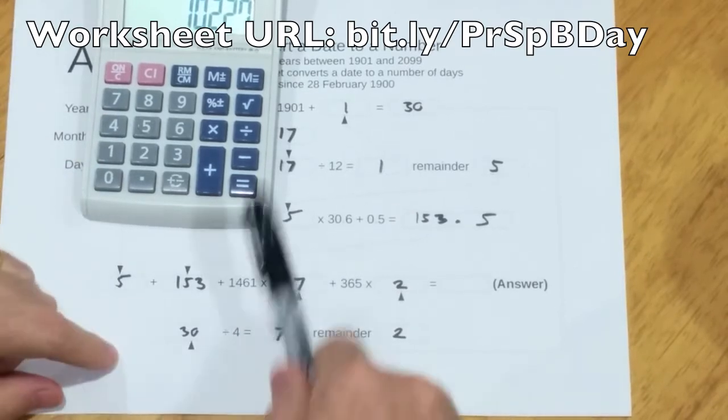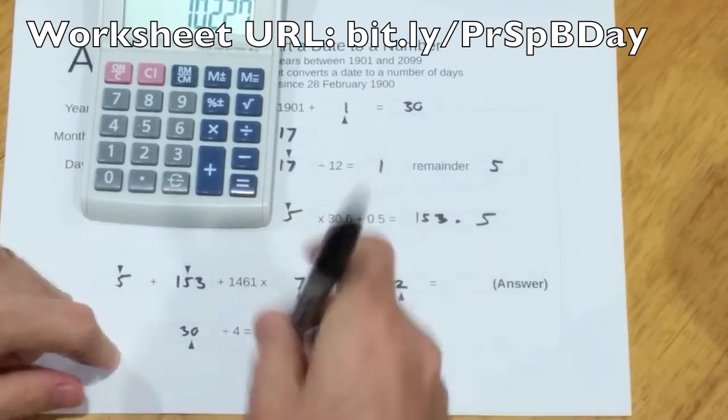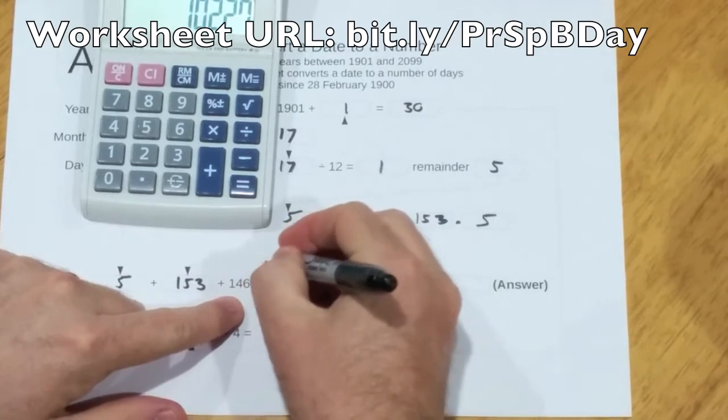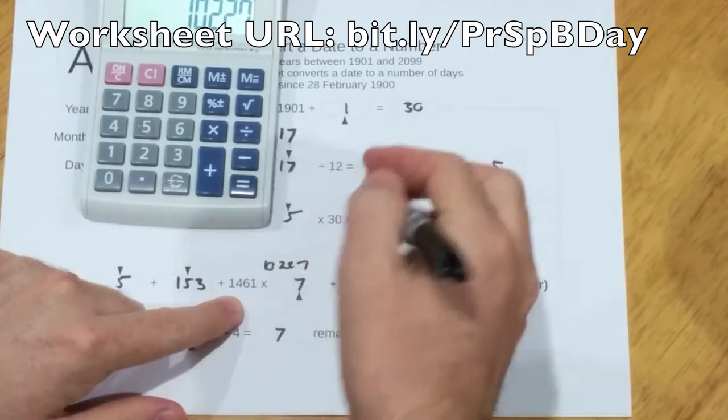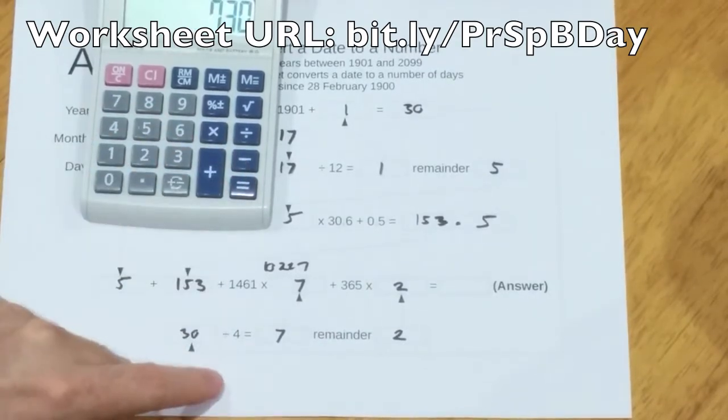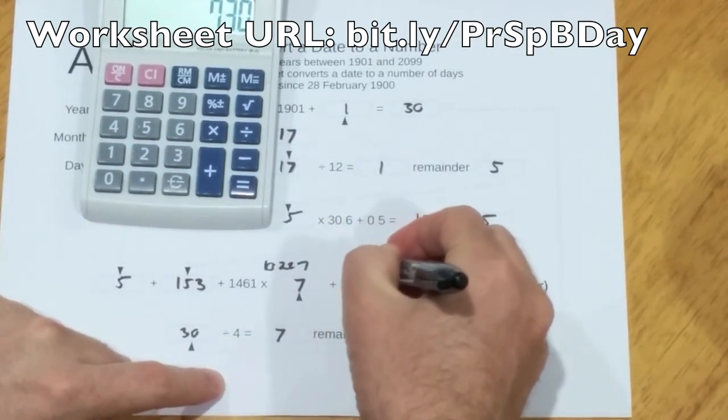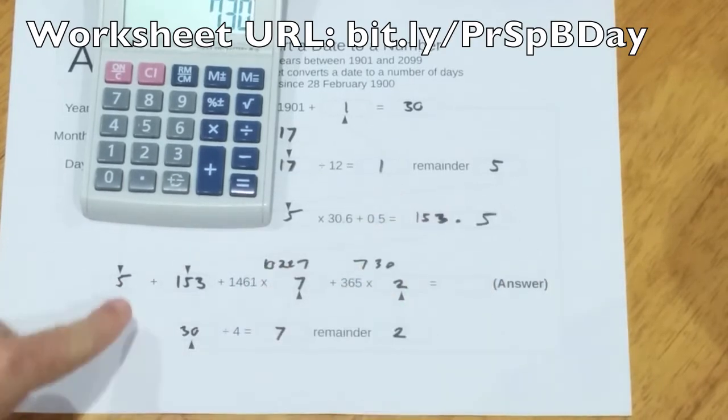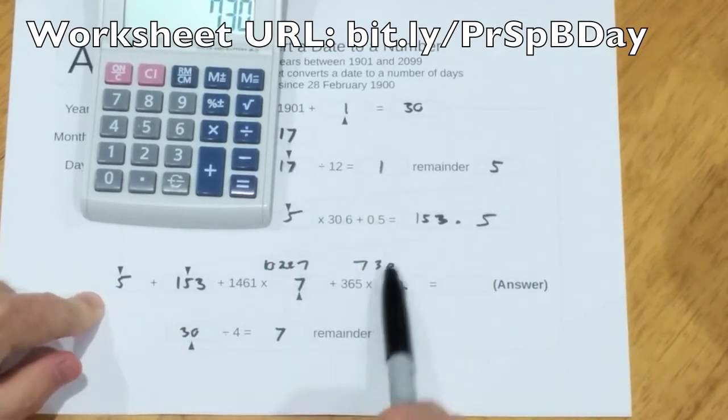That's 10,227. I'll write that there. I don't have to, I will though. 1, 0, 2, 2, 7. Now we're ready to add all these numbers together.